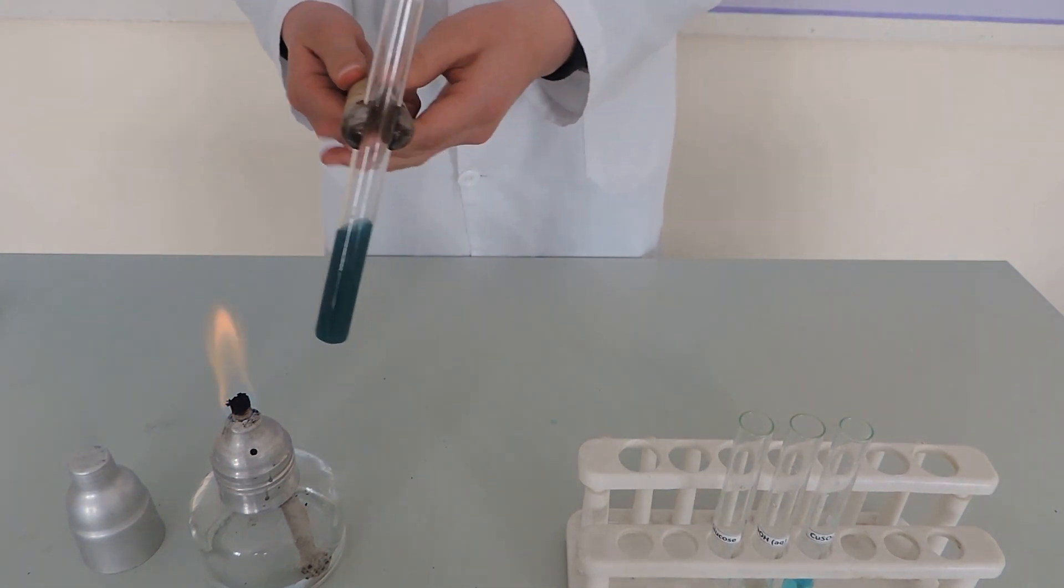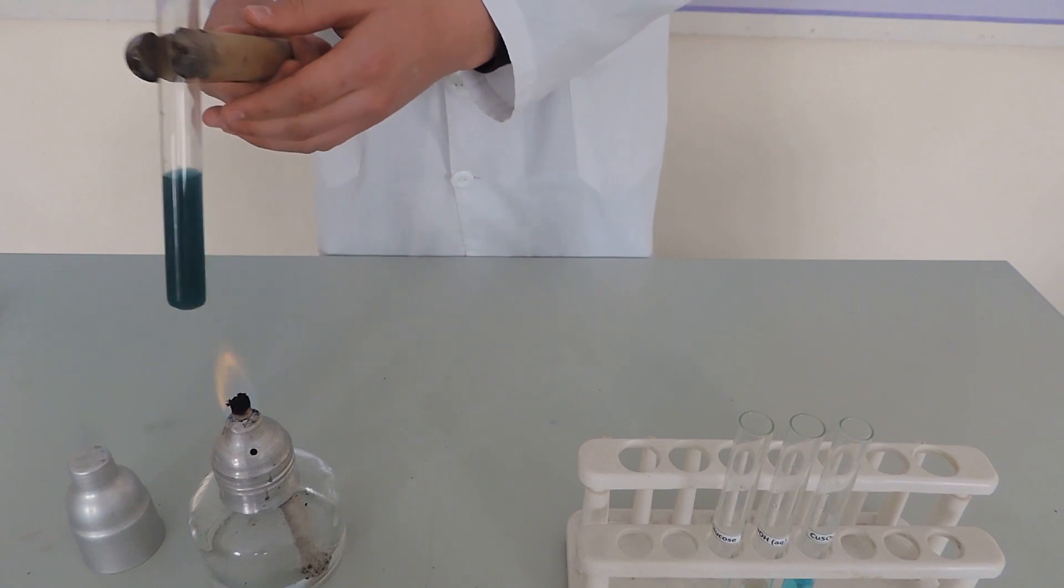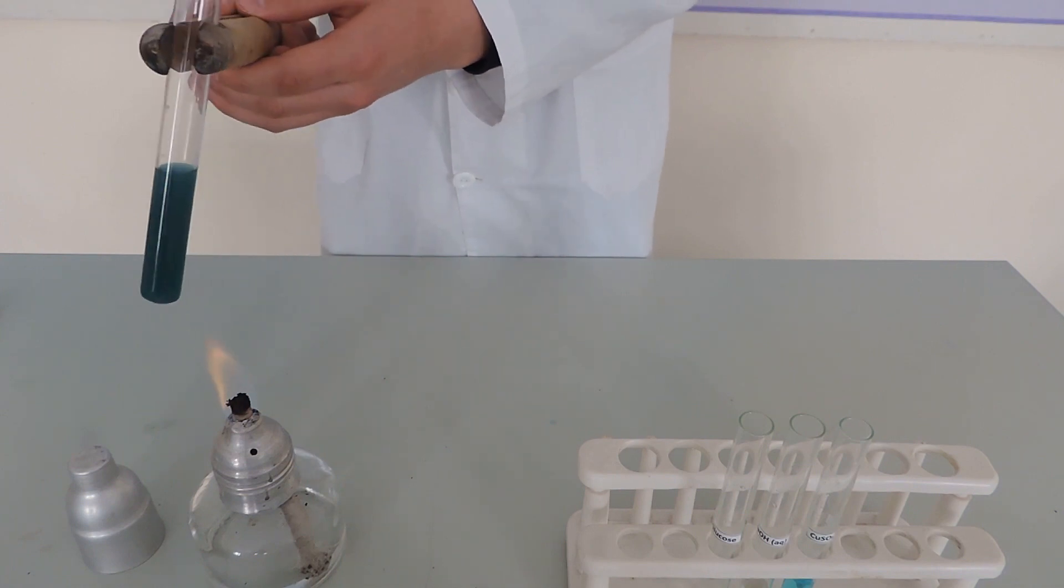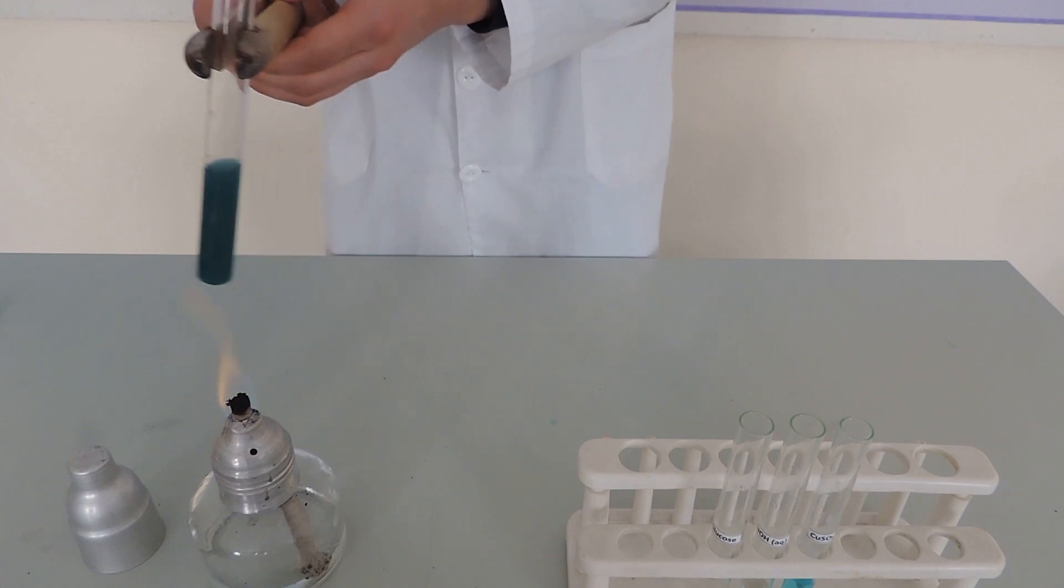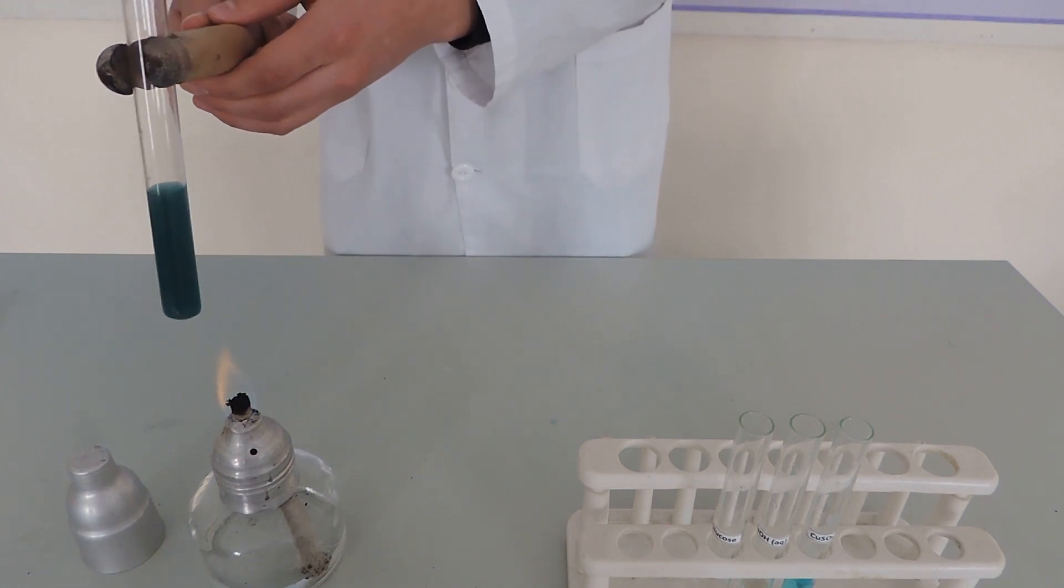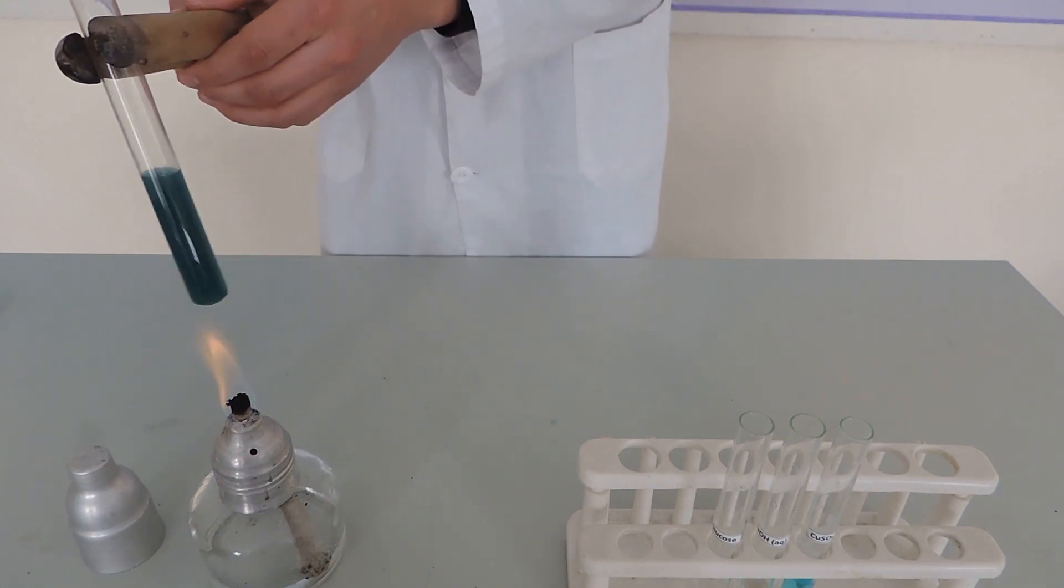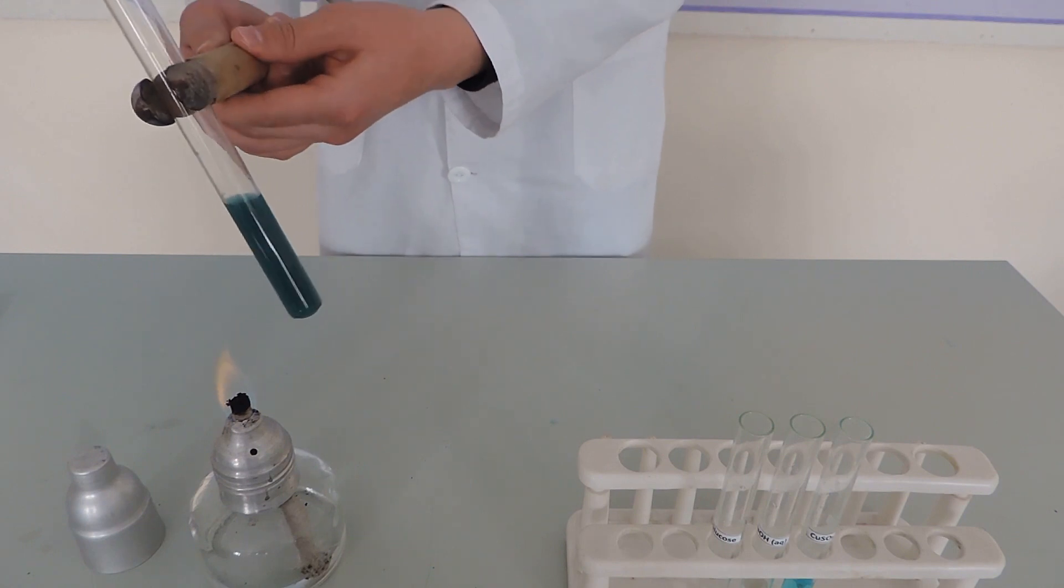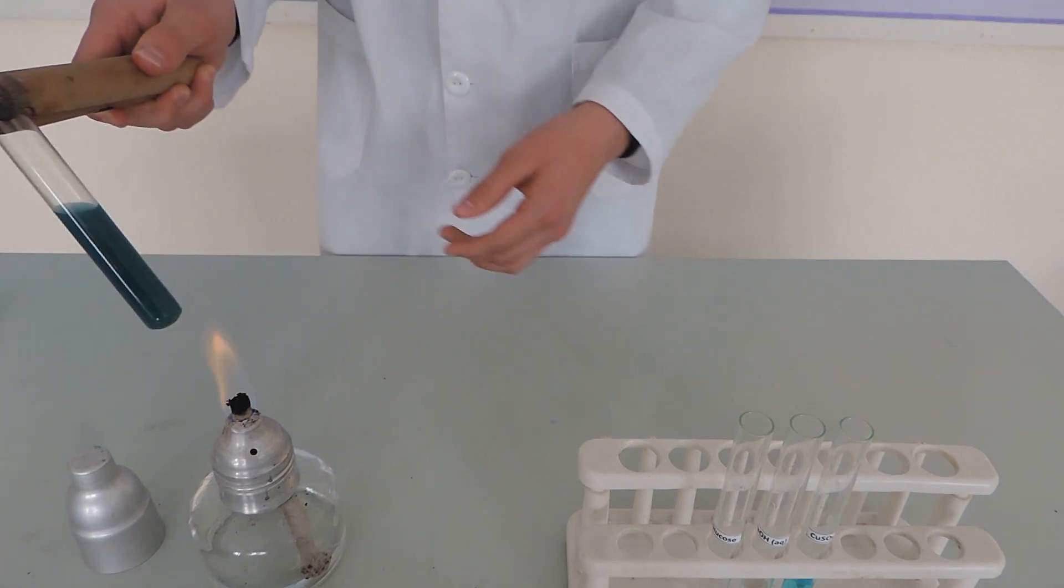So we add glucose to this solution as well. When we heat the mixture, glucose first reduces the copper +2 ion to copper +1 ion.